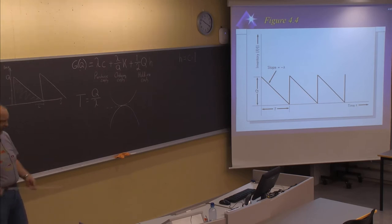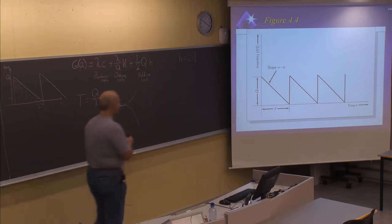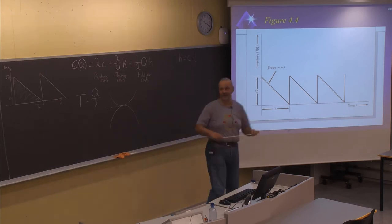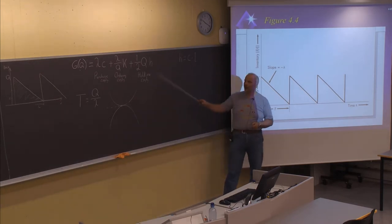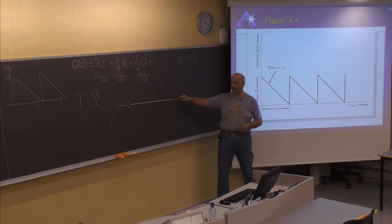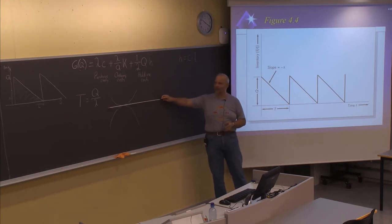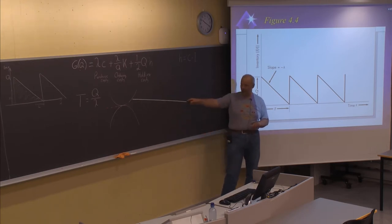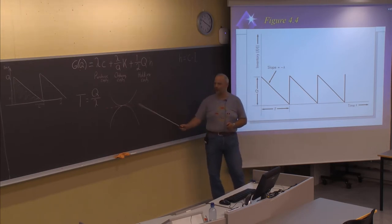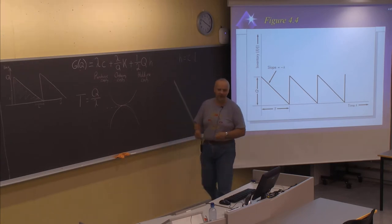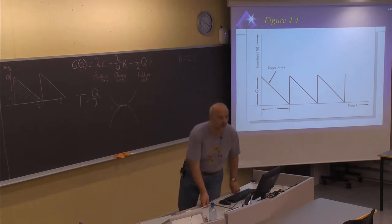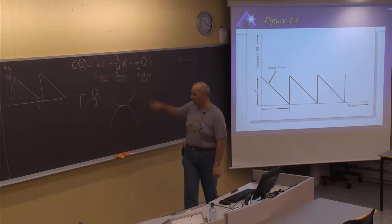We have also had a very short repetition from mathematics. To find the optimal point of a function, we should try to derive it and then set the derived function equal to zero, because then you will have either the maximum or the minimum point when you solve the derived function equal to zero. So let's now try to derive this cost function.